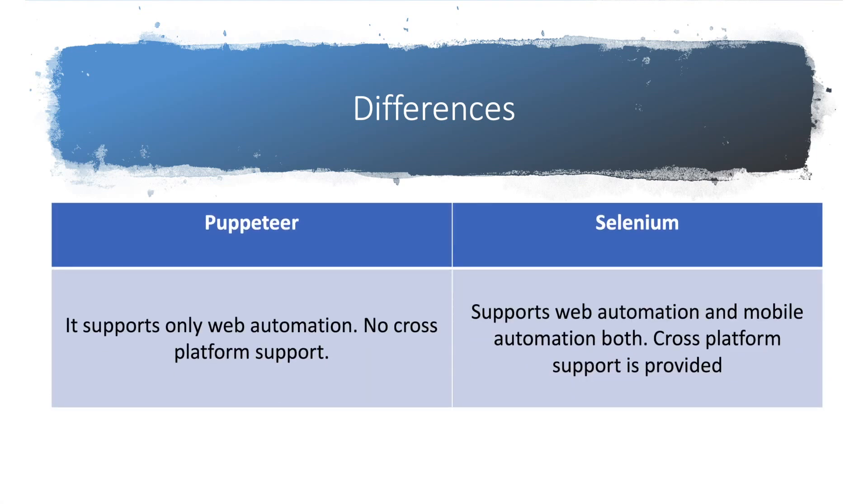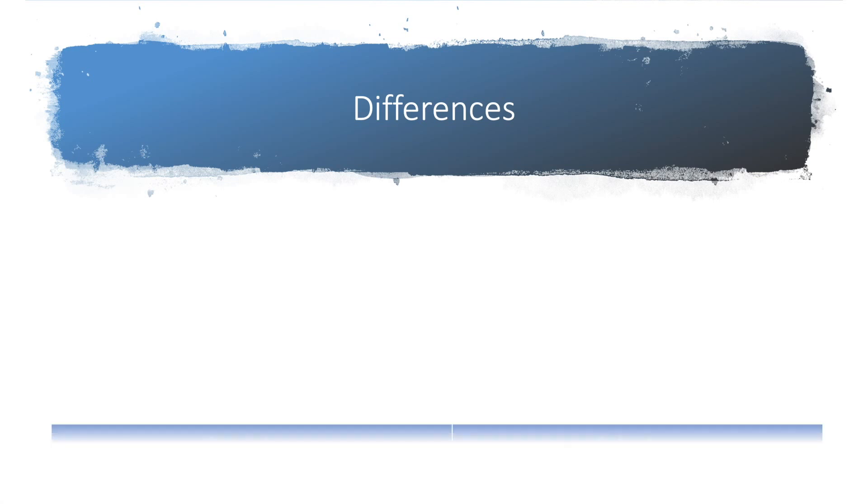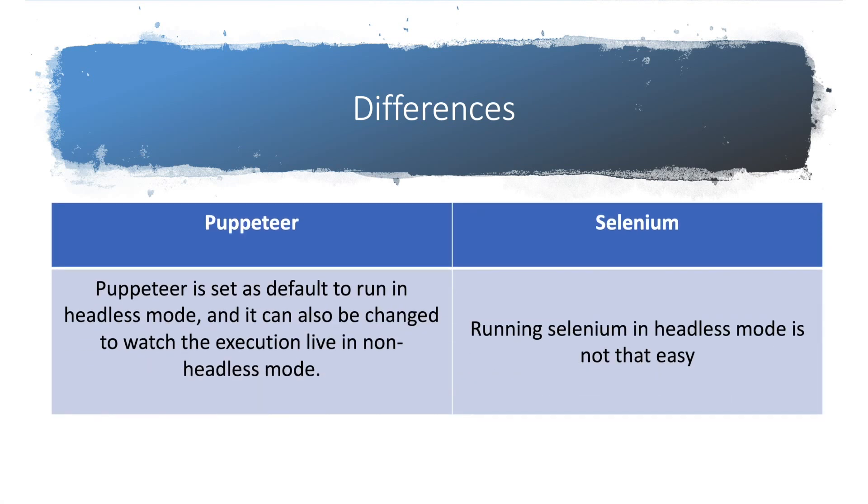Puppeteer supports only web automation, no cross-platform is supported. But Selenium supports web automation as well as mobile automation. It also supports cross-platform. With tool Appium, you can actually automate mobile applications. We will have more videos on that.